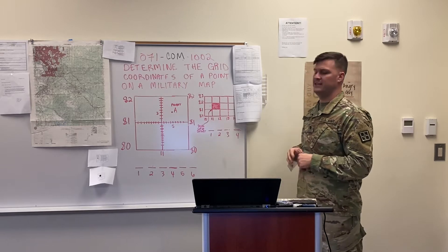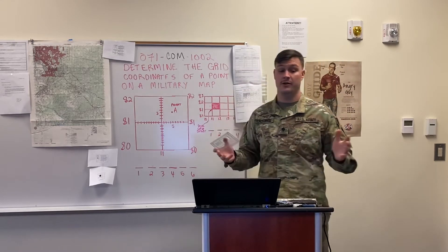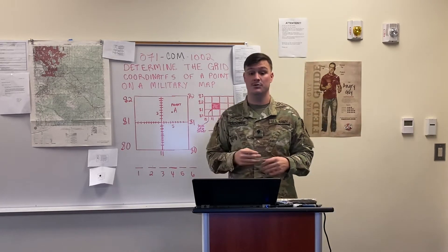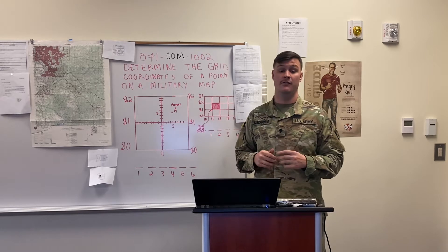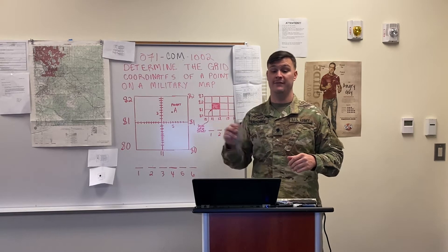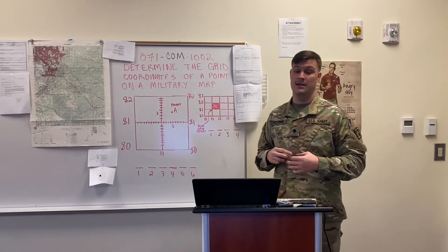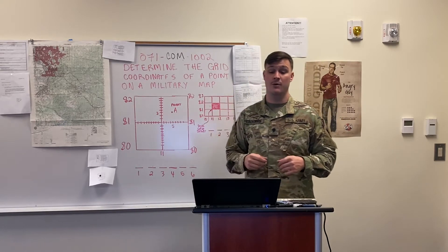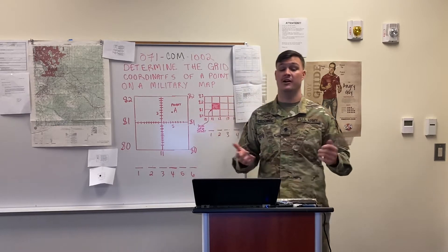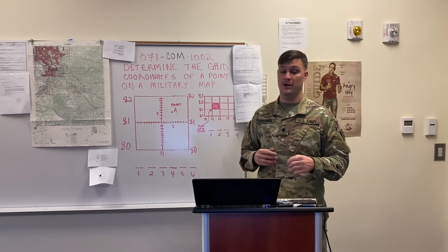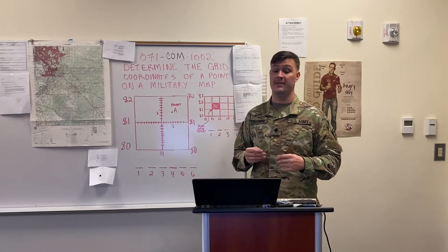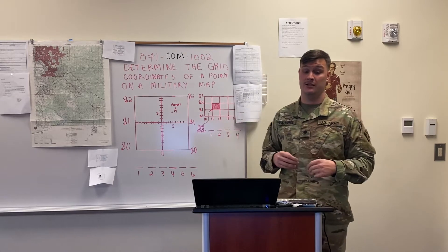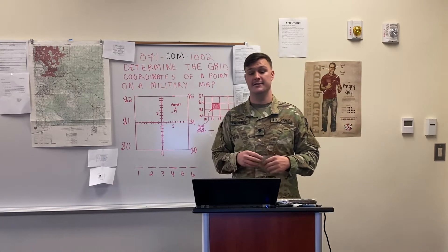We're going to start with the conditions. You are a member of a squad or team in a field environment and have been directed to identify the grid coordinates of a point on a 1:50,000 scale military map. You have a coordinate scale and protractor or plotting scale, a pencil and paper, and you have been shown the point on the map. The standards are to determine the coordinates of the grid square and determine the grid coordinates of a point with and without a coordinate scale and protractor or plotting scale, and identify the hundred-thousand-meter square identifier to determine grid coordinates.